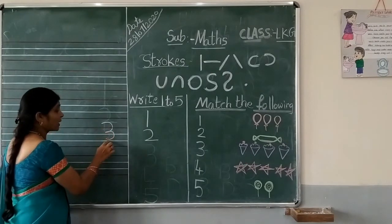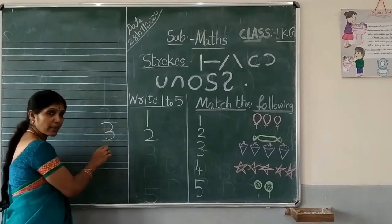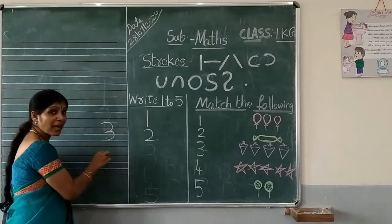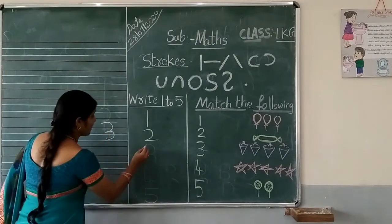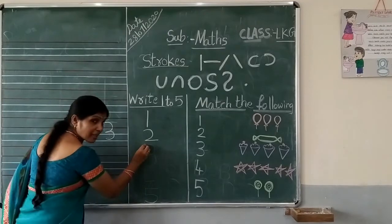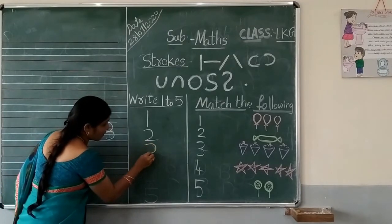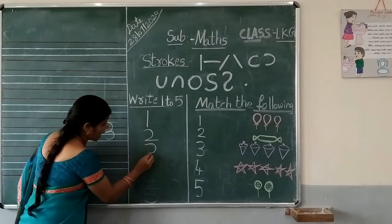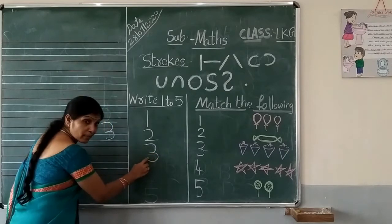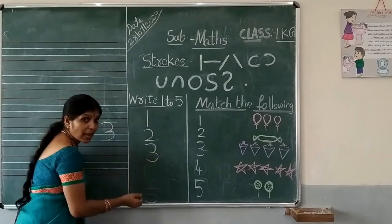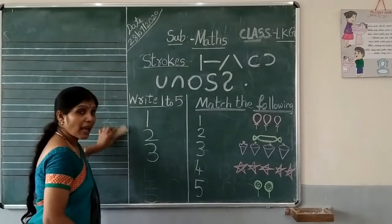One left curve and one sleeping line, now it is number 2. One after number 3. Come on children, let's try number 3. Which curve should come? Yes, left curve. One left curve, and one more, and one more left curve, now it is number 3.